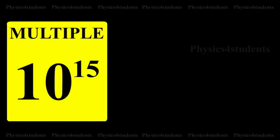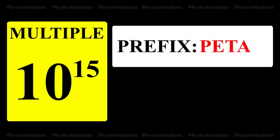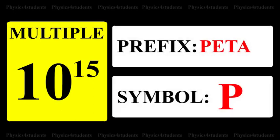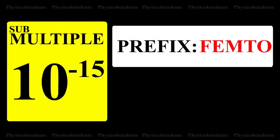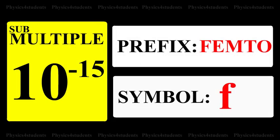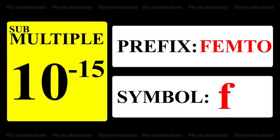10 raised to 15: prefix is Peta, symbol is P. Submultiple is 10 raised to minus 15: prefix is Femto, symbol is F.